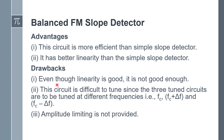Another drawback of this circuit is that it is difficult to tune since the three tuned circuits are tuned to three different frequencies: fc, fc plus Δf, and fc minus Δf. The final drawback is that an amplitude limiter is not provided. Because of this, if any amplitude variation is present in the frequency modulated signal, it will not be eliminated by the balanced slope detector, which increases the noise level at the receiver side.